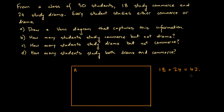From this information, what can we conclude about the number of students who study both commerce and drama? That's easy — we can calculate that number. We can just say 42 minus 30. We subtract 30 from the total number of hands raised and we get 12. So there are 12 students who had their hands raised for both studying commerce and studying drama.